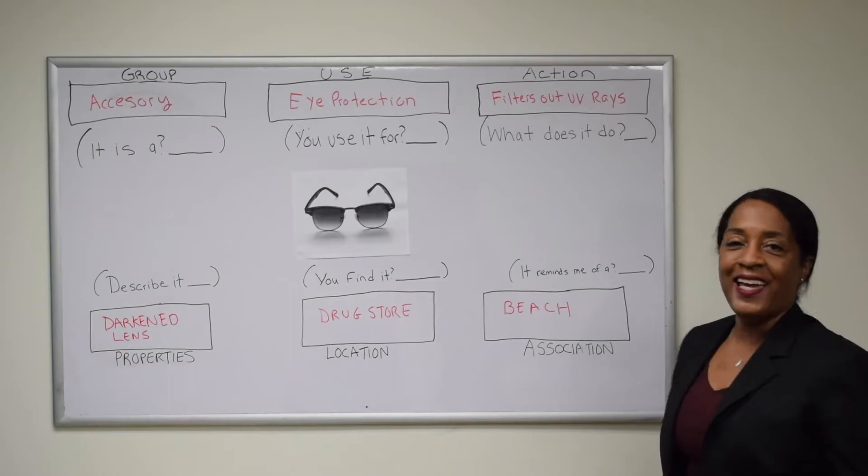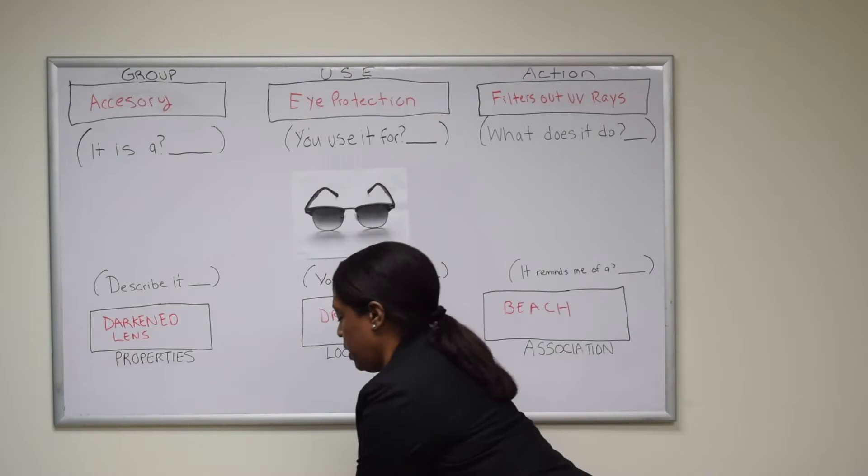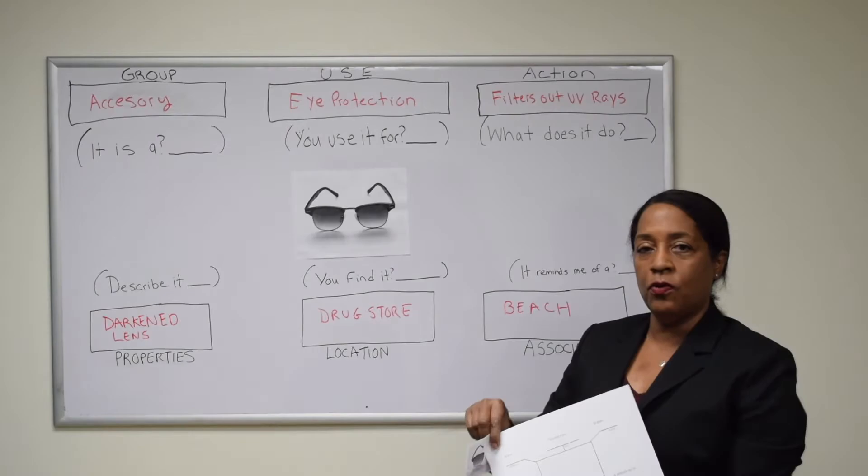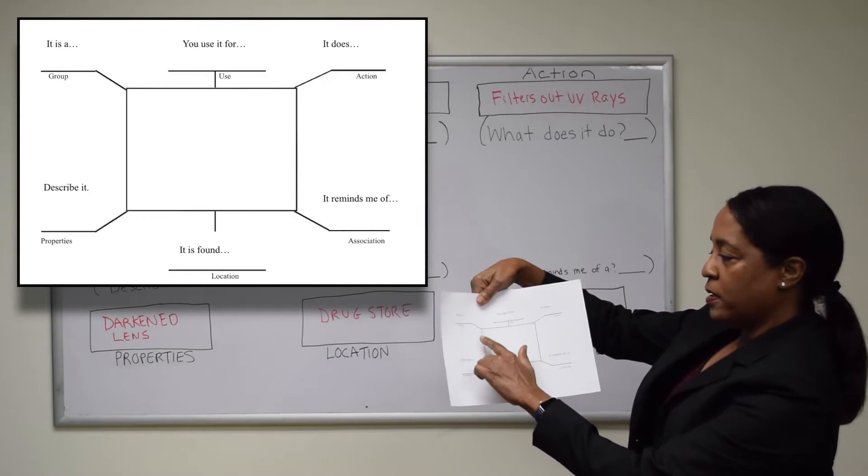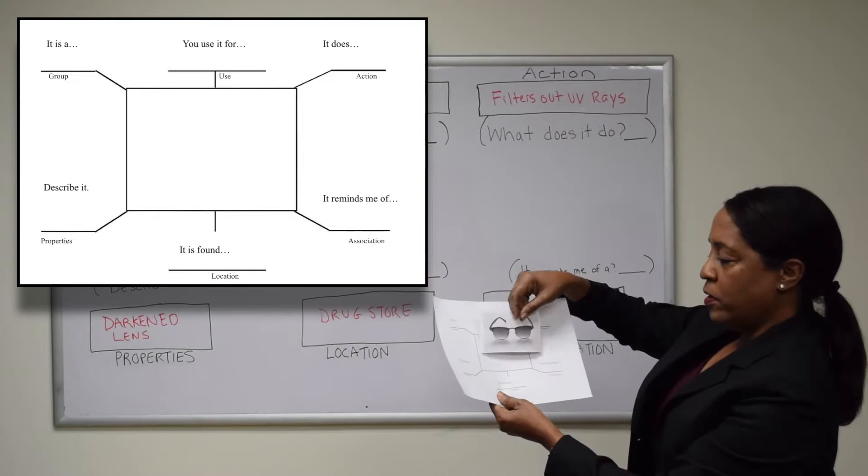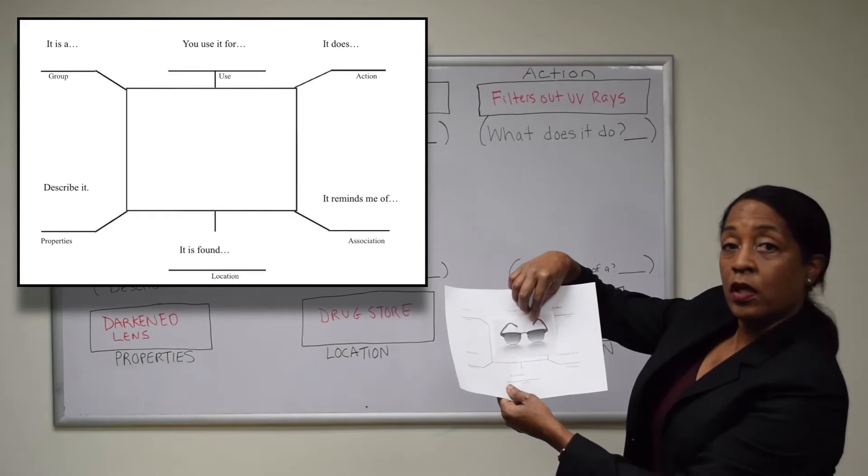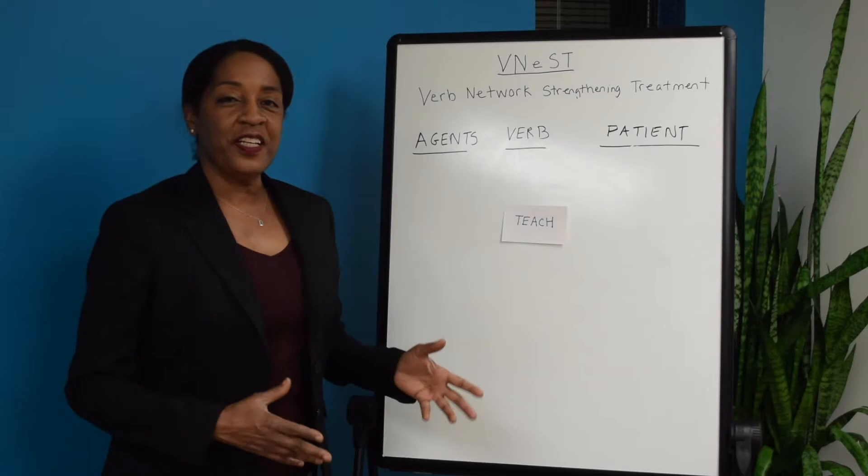Lastly, 'it reminds me of' is correlated with association. 'Where you find it' is correlated with location. Association is whatever reminds them of it - could be going to the beach or wearing them when driving. What the patient would have in front of them in a typical therapy session is their own semantic feature analysis form which has the same information and questions, and then I would just pop a picture right in the middle and they would answer those questions.